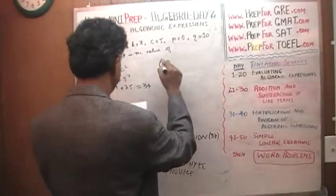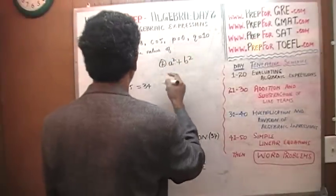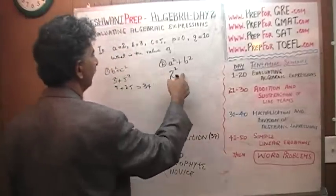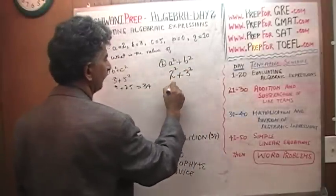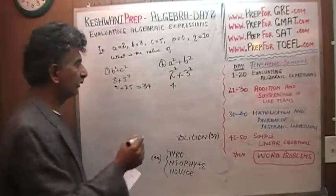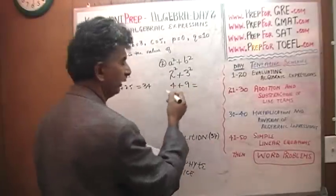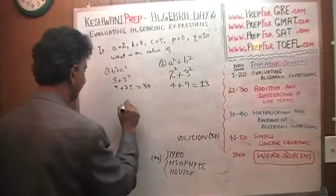Number two: a squared which is 2 squared, a is 2, plus b squared which is 3. 2 squared is 4, 2 times 2 is 4, and 3 times 3 is 9. 4 plus 9, we know 10 times 4 is 14, so 9 plus 4 must be 13.